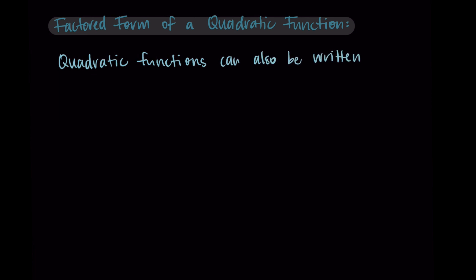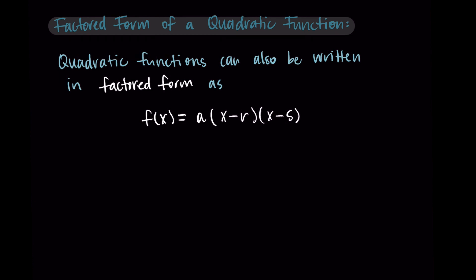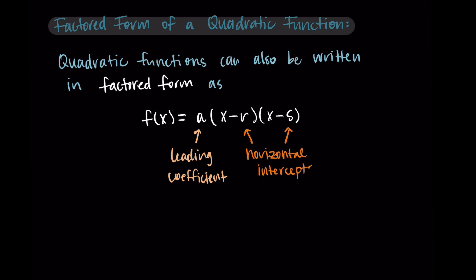Quadratic functions can also be written in a form called factored form, and it looks like the following. If our function is f, we have f of x is equal to a times x minus r times x minus s. Here a is still the leading coefficient — the same leading coefficient as in standard form — and then we have this written as two factors being multiplied together: x minus r is our first factor, and x minus s is the second factor. r and s here are just some real values, and specifically they are the horizontal intercepts of the quadratic function.